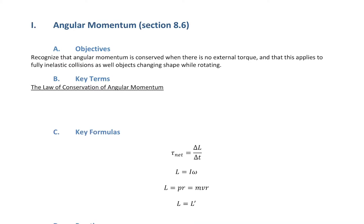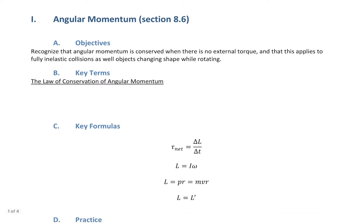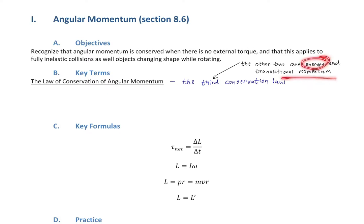The key term here is the law of conservation of angular momentum. This is the third conservation law. The other two conservation laws you've seen so far are energy and translational momentum — those are the big three conservation laws of mechanics: energy, translational momentum, and angular momentum.